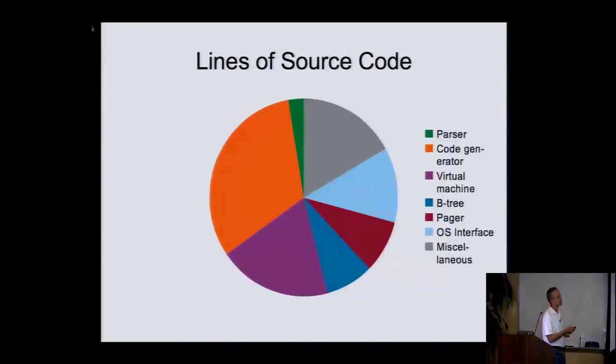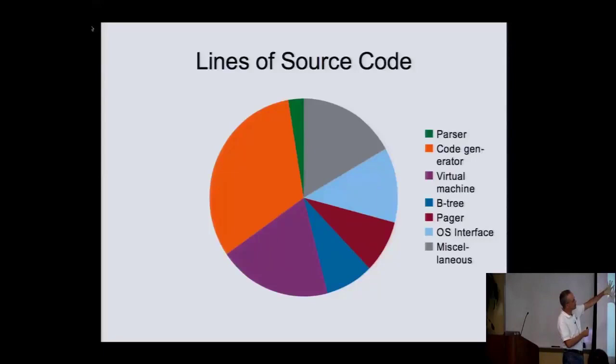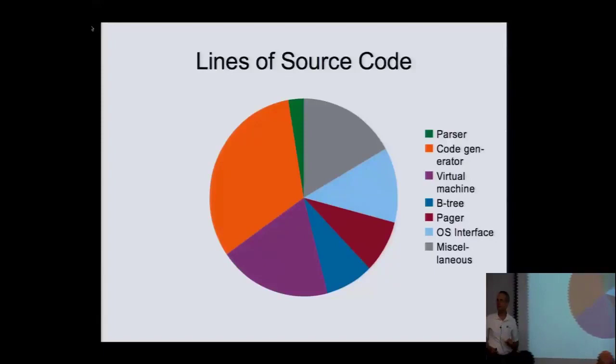There was a question about what percentage of the code each layer represents. The parser is a little green slice. The code generator is the bulk of it — the code generator, virtual machine, and parser together are over half. The B-tree layer is just a thin little slice — it's really not that much.